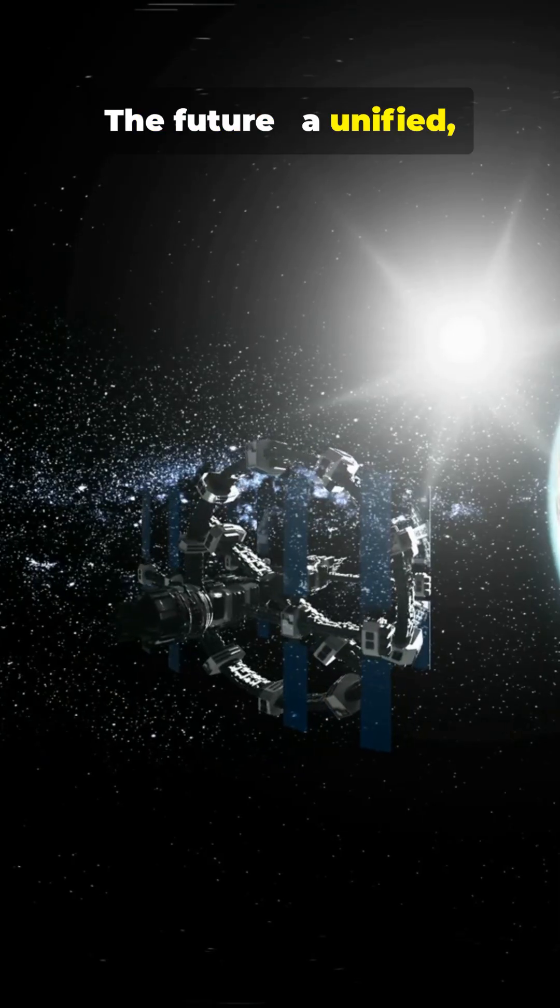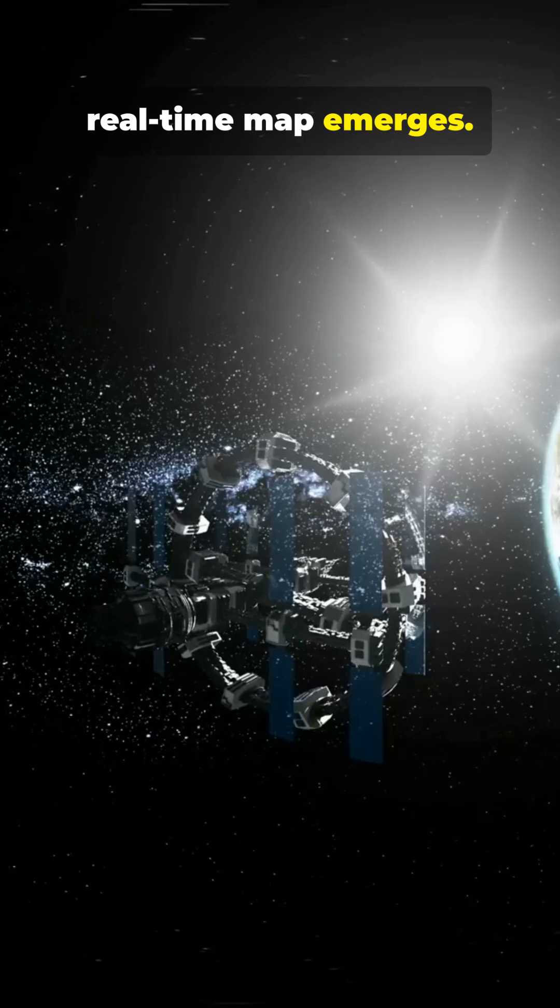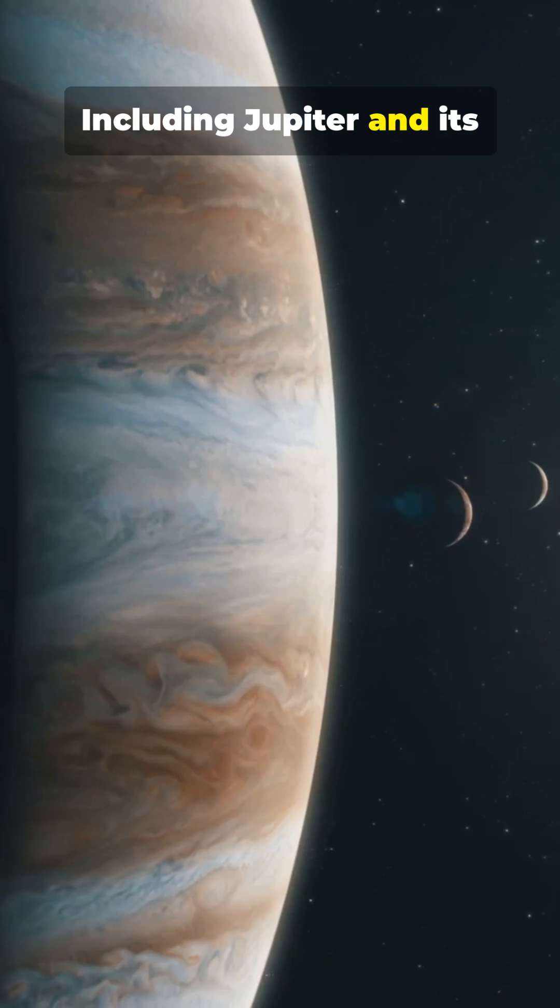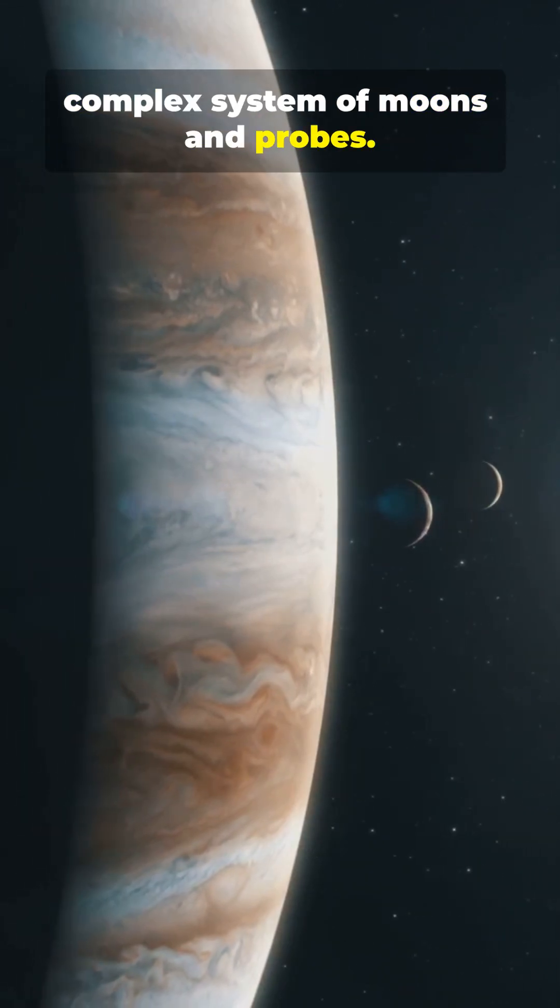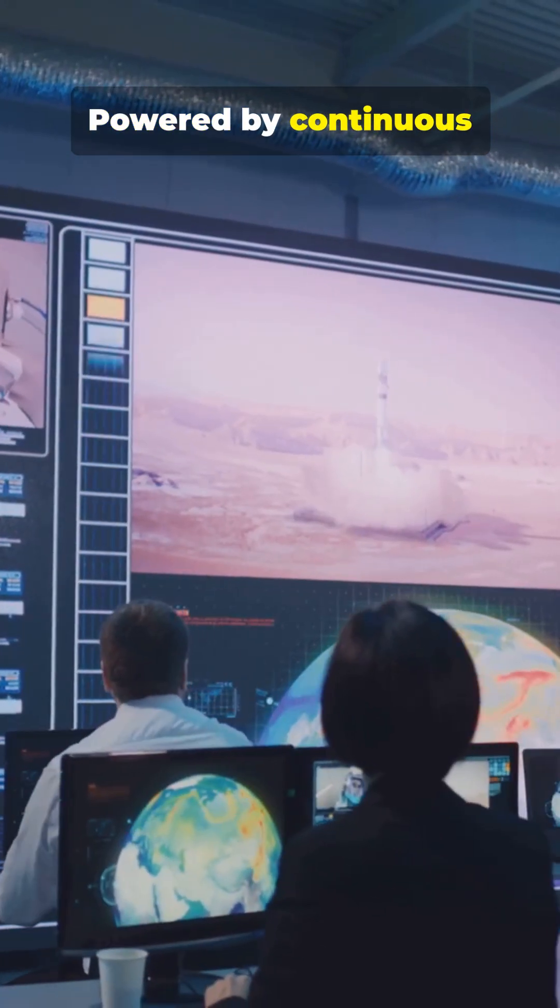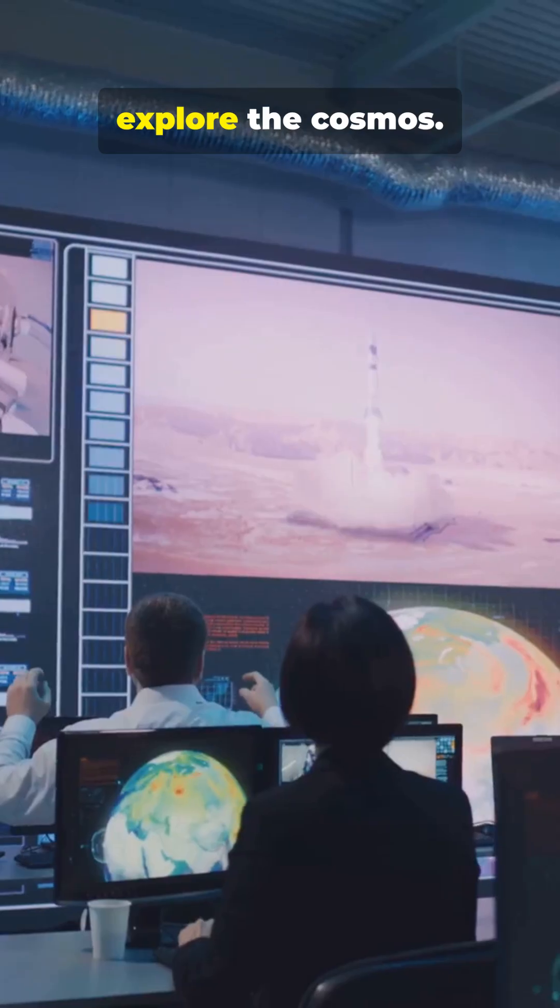The future: a unified, real-time map emerges, spanning the Moon with precise surface and orbit tracking, including Jupiter and its complex system of moons and probes, and Saturn's realm mapped in real-time, powered by continuous innovation expanding how we explore the cosmos.